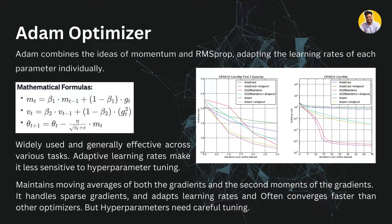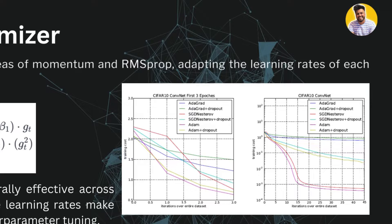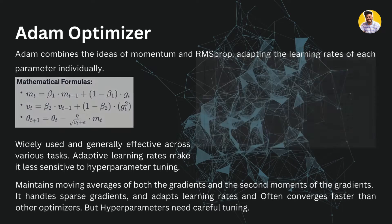Adam maintains moving averages of both the gradients and the second moments of the gradients, handles sparse gradients well, and adapts the learning rates accordingly — though hyperparameters still need care. Looking at the convergence graph, you can see that faster convergence is achieved only by the Adam optimizer compared to others. Now let me explain what momentum and RMSProp are.